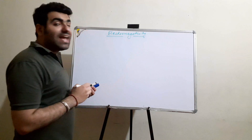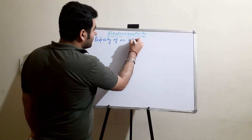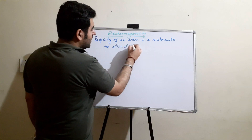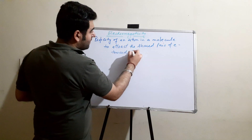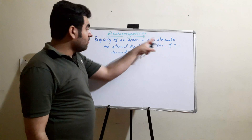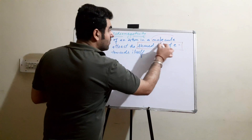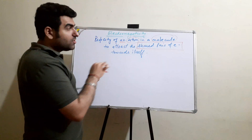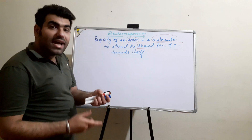What basically is electronegativity? Electronegativity is the property or tendency of an atom in a molecule to attract the shared pair of electrons towards itself. It means that sharing of electrons has taken place in a molecule, and out of the atoms in that molecule, one atom is capable of attracting that shared pair of electrons towards itself. That tendency or property is known as electronegativity.